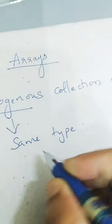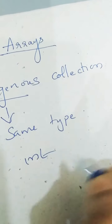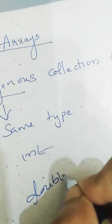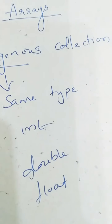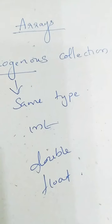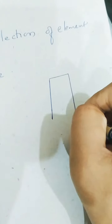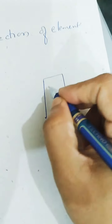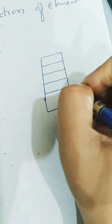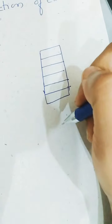An array will be either int, double, float — anything. All the elements in that array will be of the same type, that is why it is called a homogeneous collection of elements. Usually an array is just like a shelf — so many things you can arrange in an array, either horizontal or vertical.